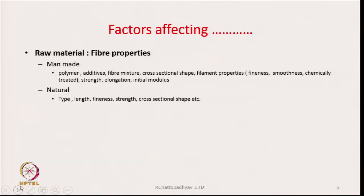If we discuss raw material, we can have man-made or natural fibers. For man-made fibers, what matters is the polymer, the additives, whether it is a fiber mixture, the cross-sectional shape of the fiber, fineness, smoothness, whether it has been chemically treated, and properties such as strength, elongation, and initial modulus.